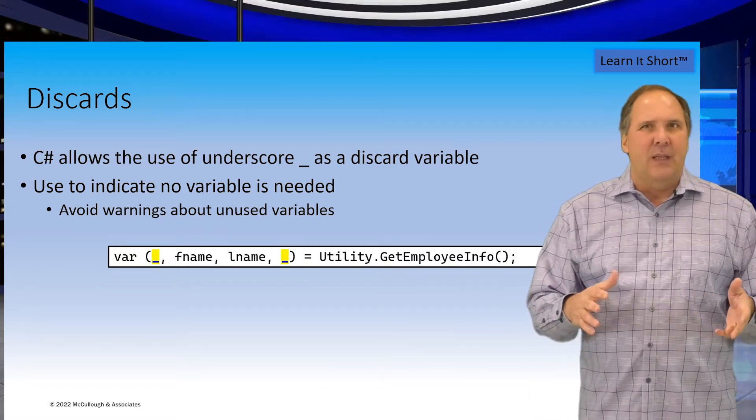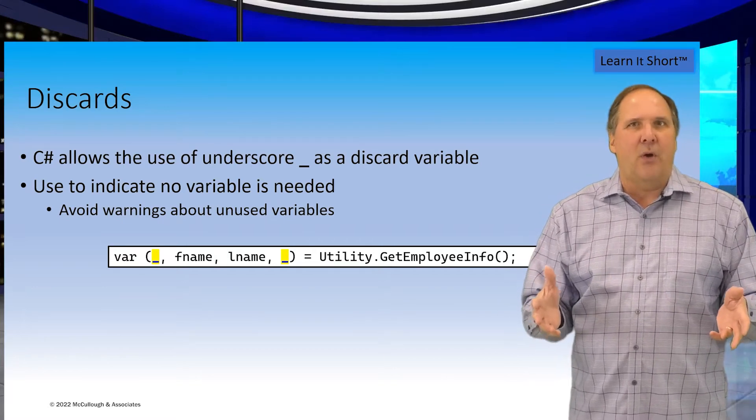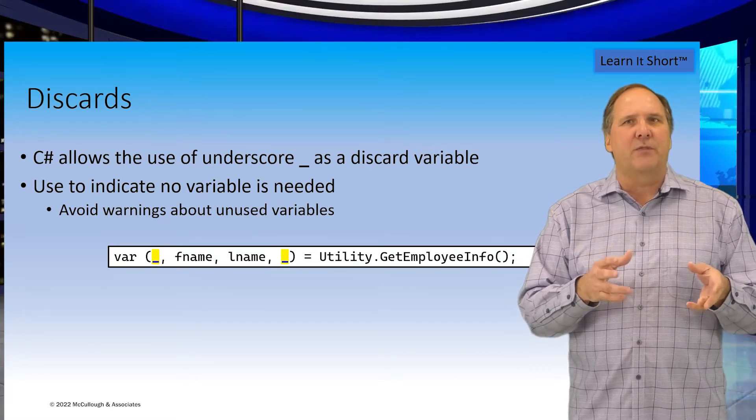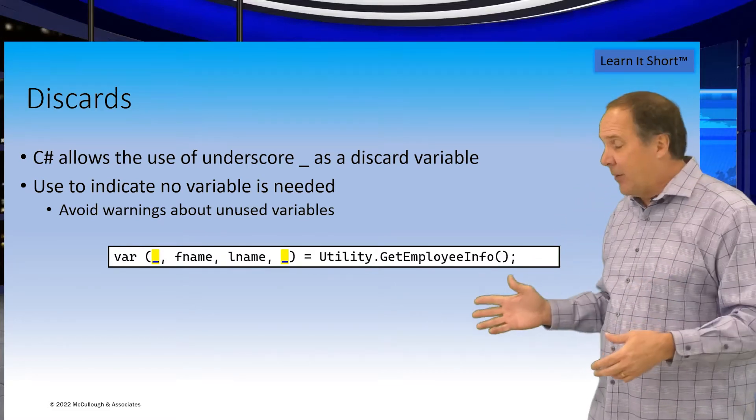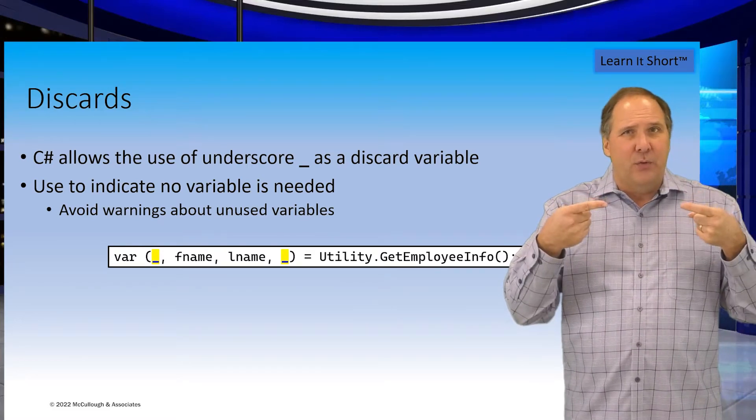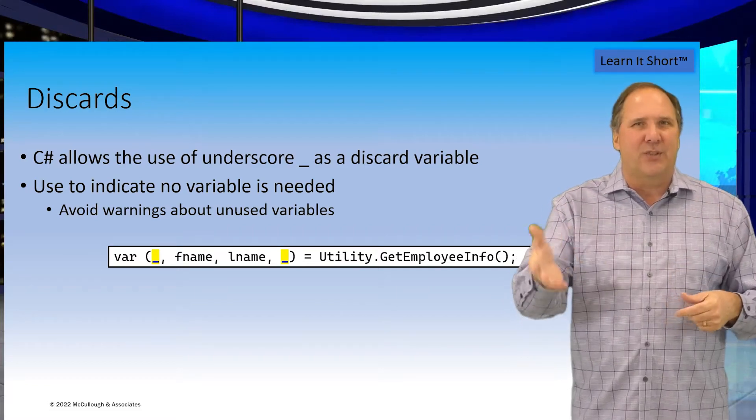The discard avoids those warnings about the unused variables. In this example, the coder only needs the employee's first and last name, and does not need the ID or the salary, so they use an underscore to discard them.